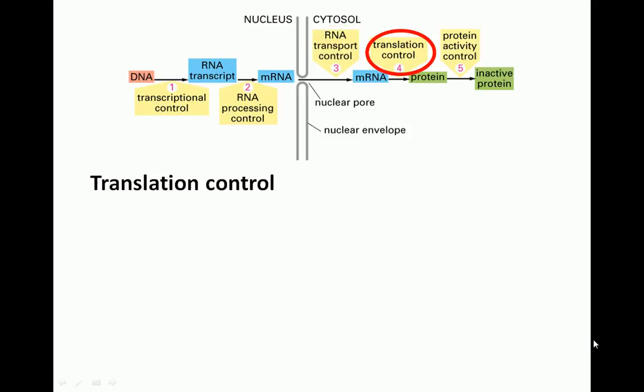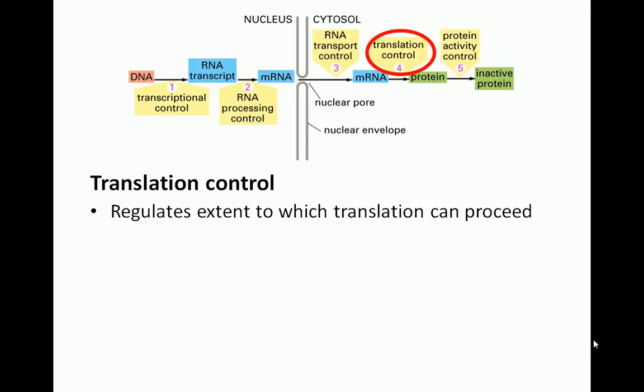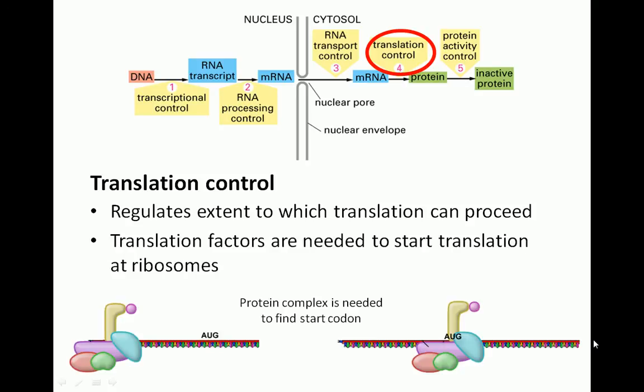Control at the translation stage affects how much translation can proceed. One way this occurs is through the use of translation factors. These proteins are needed in order for translation to begin at the ribosomes. So, altering their levels, or their ability to bind to mRNA, helps control how much, or when, a protein can be translated.